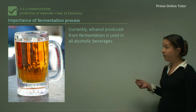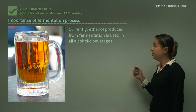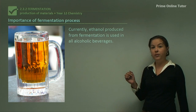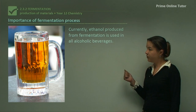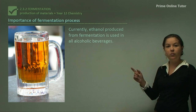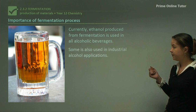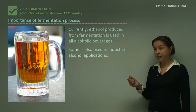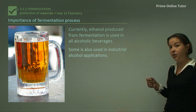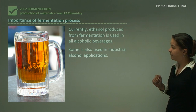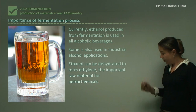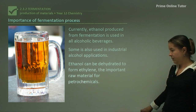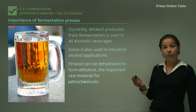Looking at the importance of the fermentation process: ethanol produced from fermentation is used in all alcoholic beverages, which is a very big market around the world. Some is also used in industrial alcohol applications, such as for use as a solvent. Ethanol can be dehydrated to form ethylene, which is the important raw material for petrochemicals.